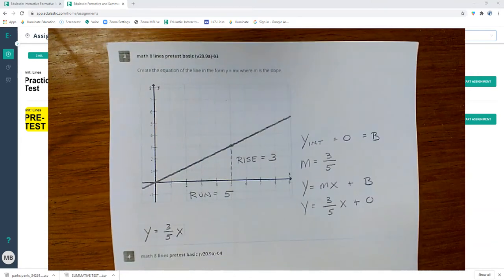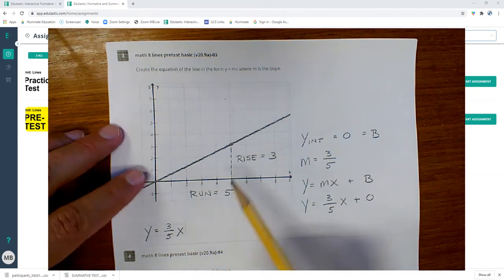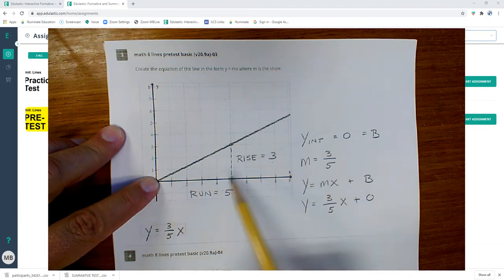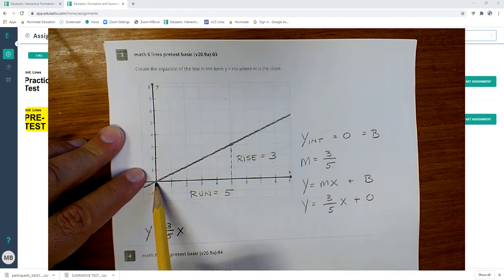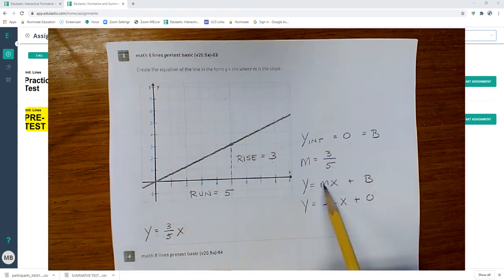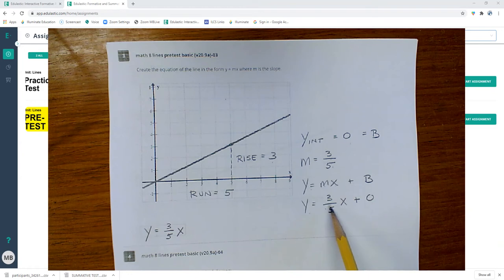Create the equation for this line. In order to create the equation, I first have to find the slope. To find the slope, I find two good points. I count my rise, which is three, count my run, which is five, so my slope is three-fifths. I come over here and I find my y-intercept, that's at zero. So y equals mx plus b, y equals three-fifths x plus zero, or just y equals three-fifths x.